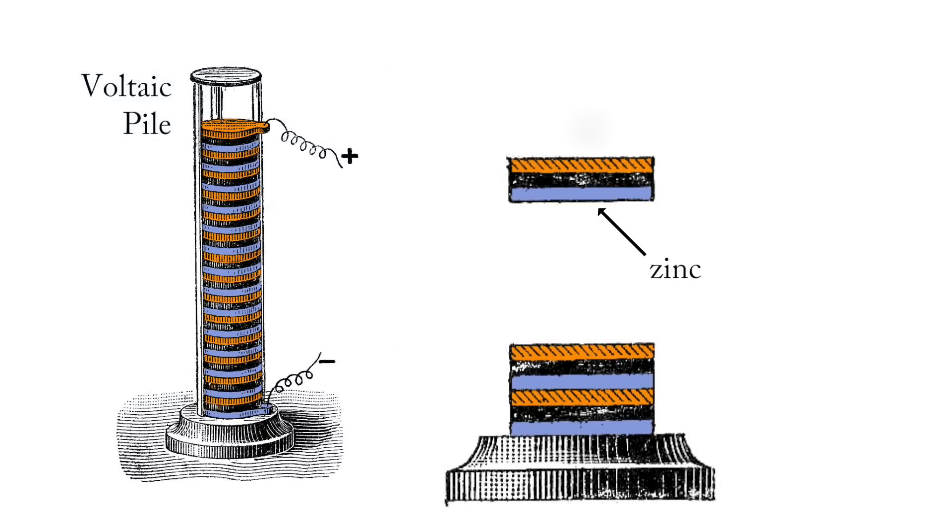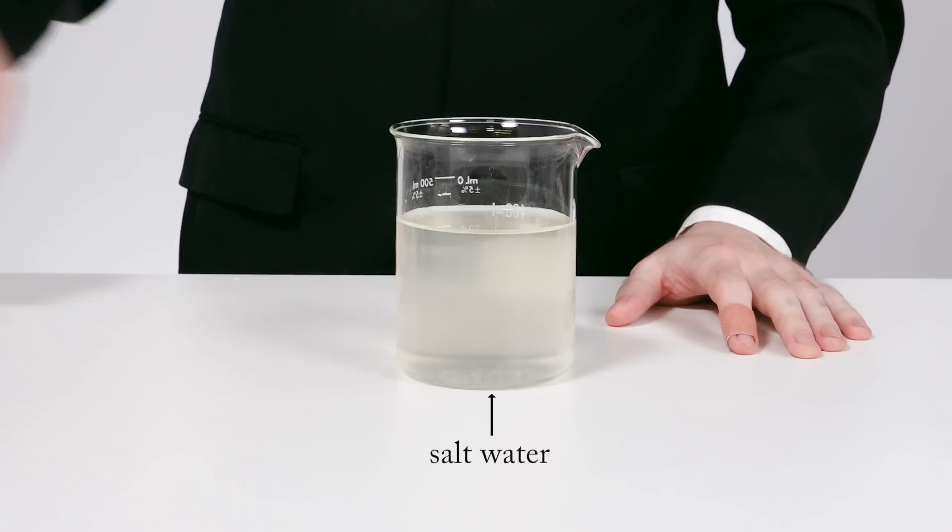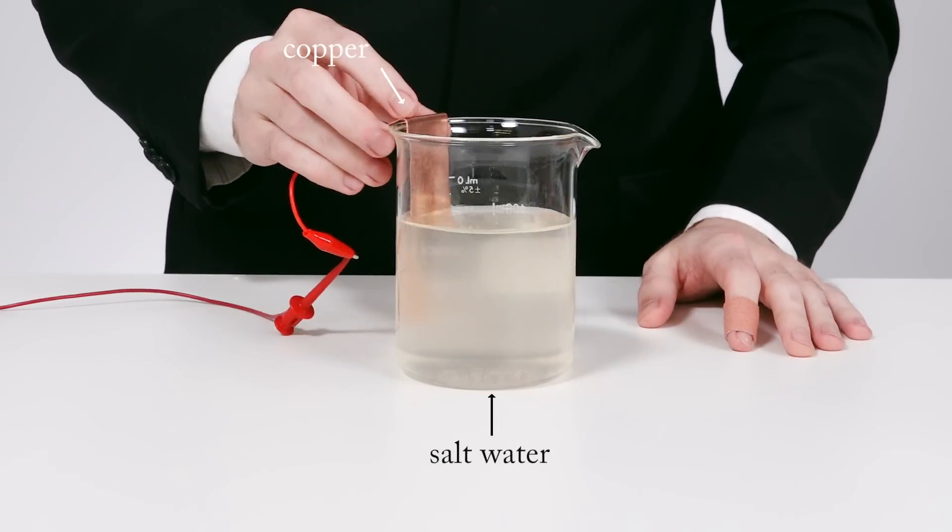The zinc discs served as anodes, the copper as cathodes, and the salt water was an electrolyte. With these simple materials, we can easily create our own voltaic pile. Let's start by making a single voltaic cell in a beaker.